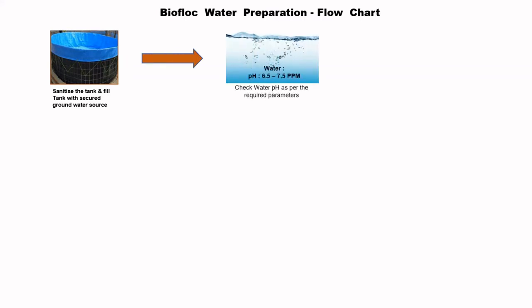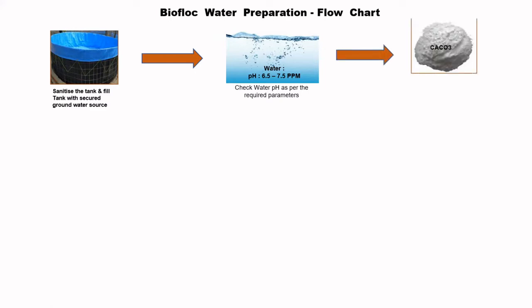Check the water pH as per the required parameters. It should be between 6.5 to 7.5 ppm. If pH is below 6 ppm, add calcium carbonate (CaCO3) to achieve the pH between 6.5 to 7.5 ppm.